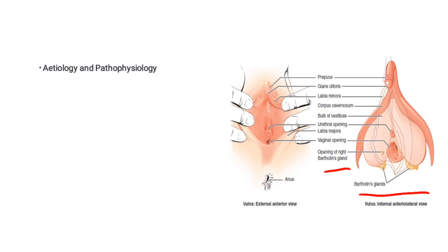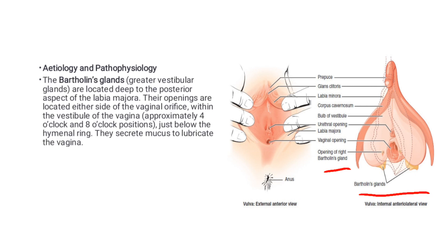In terms of etiology and pathology, the Bartholin's glands — also known as the greater vestibular glands — are located deep to the posterior aspect of the labia majora. Their openings are located on either side of the vaginal orifice within the vestibule of the vagina, at approximately the four o'clock and eight o'clock positions.